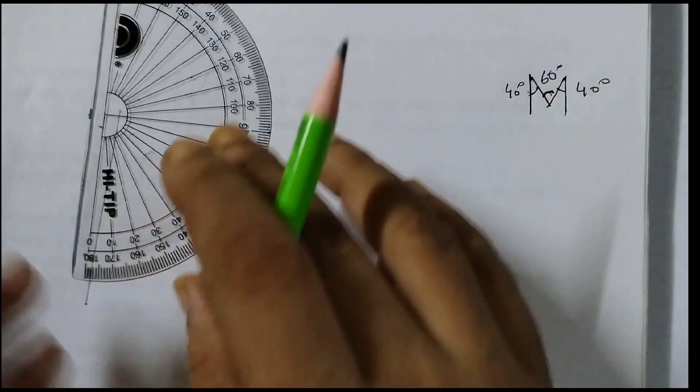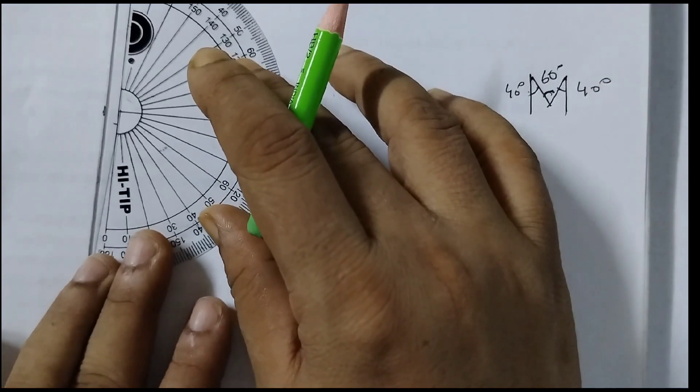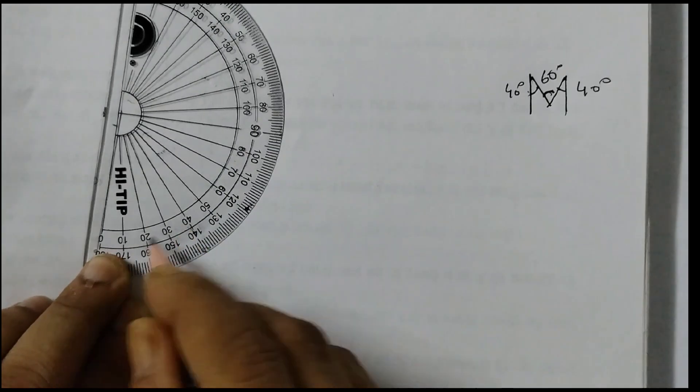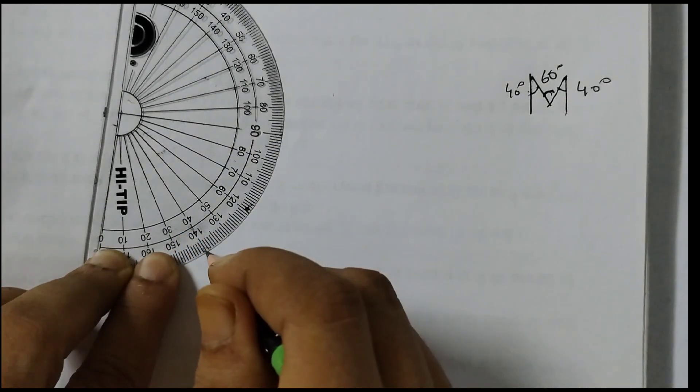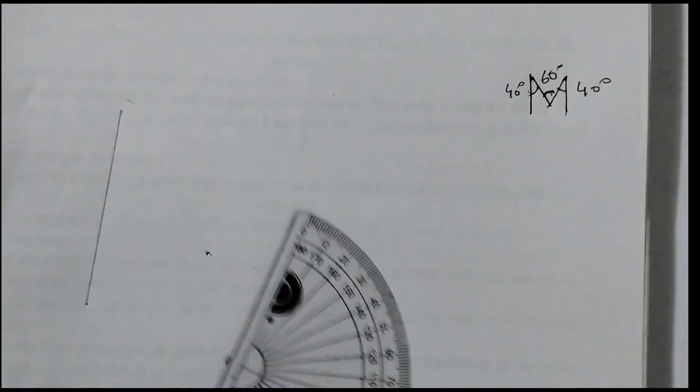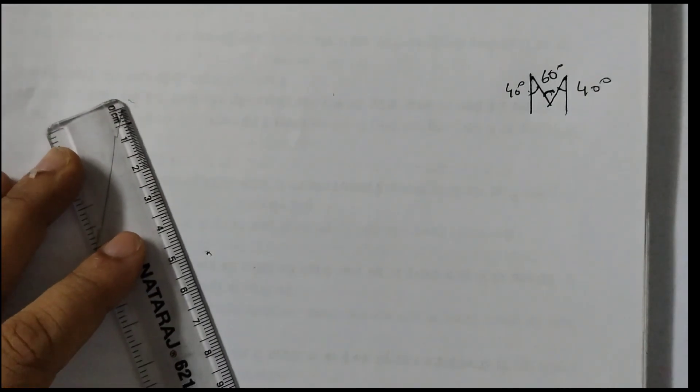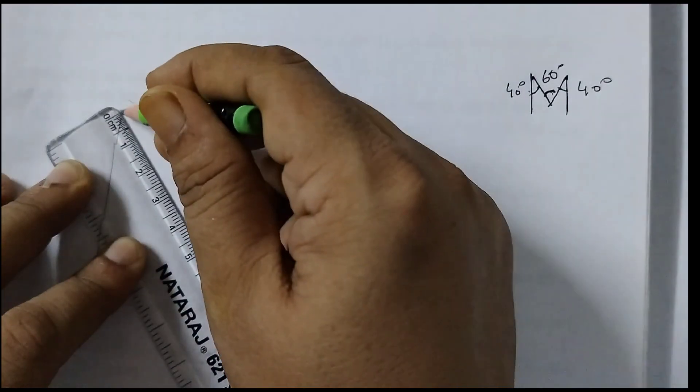Because I need a 40 degrees angle here, so I place it like this. Now we can see 40 degrees here. I am taking the inner set of numbers, 0, 10, 20, 30, 40. 40 degrees mark is here. Put a mark here. Again I'll take the measurement. I am taking from 0 and this measurement is closer to 5, so 5 here.